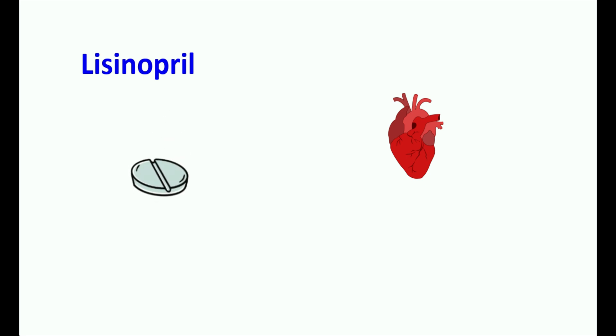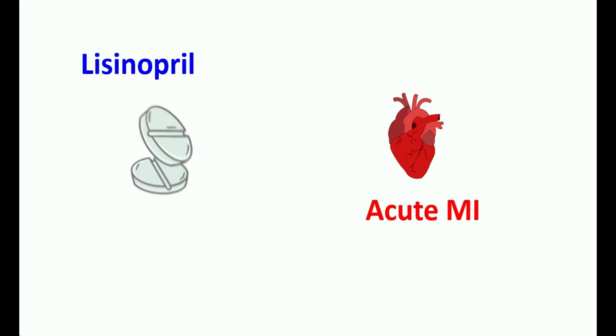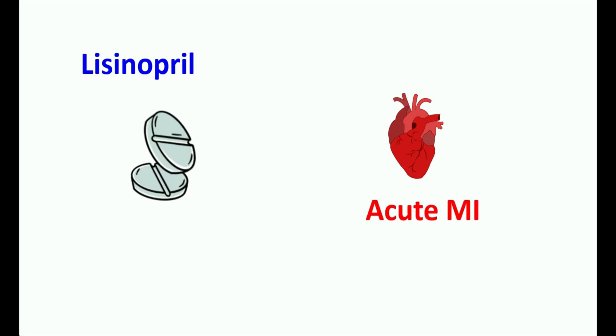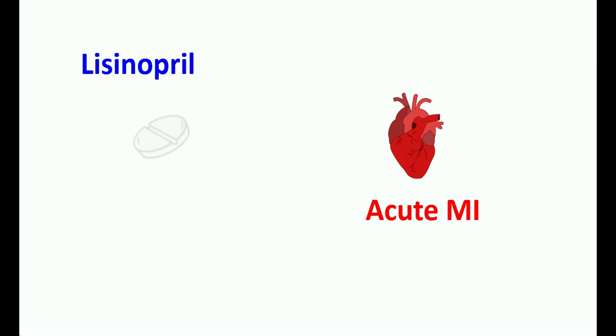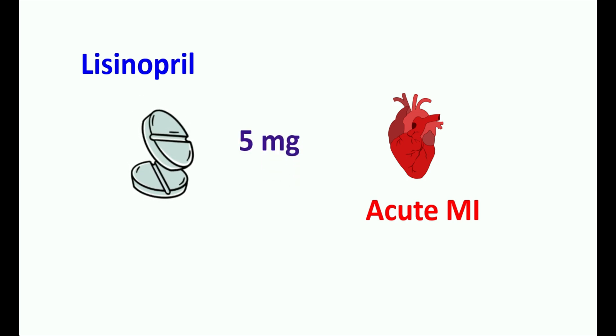Lisinopril can also be used in treating cardiovascular complications. It can be used as an adjuvant along with diuretics after acute myocardial infarction or to treat heart failure. However, in such conditions, this medication can be started at a low dose such as 5 mg along with diuretics.